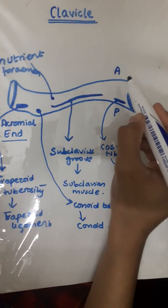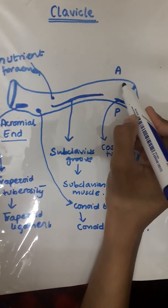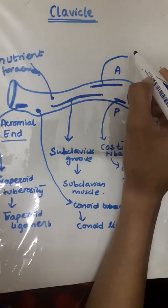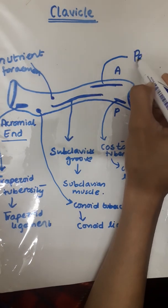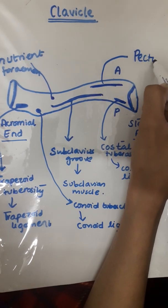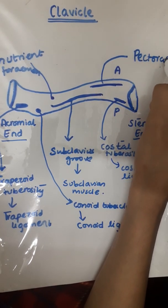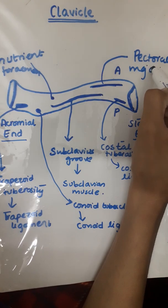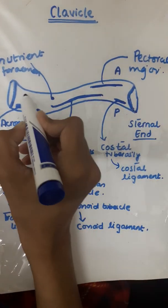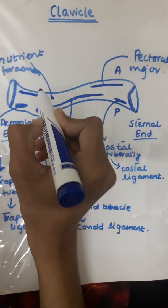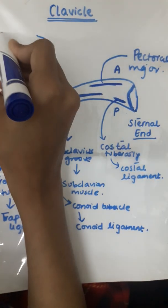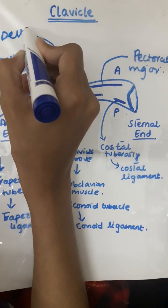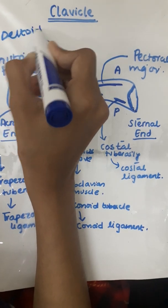On the superior surface, we have the attachment for the pectoralis major, and here we have the attachment for the deltoid muscle.